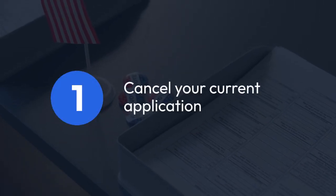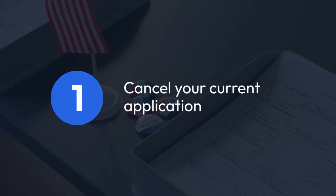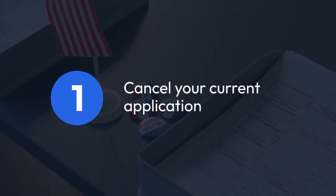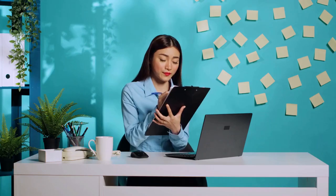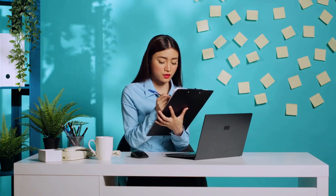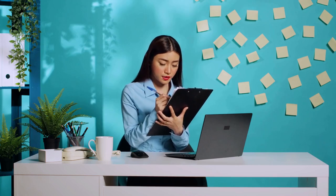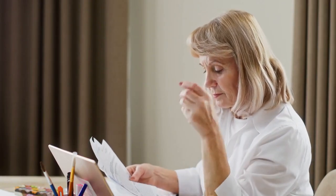Step 1: Cancel your current application. Carefully follow the cancellation procedure outlined on the NBI website. This usually involves logging into your account and looking for an option to cancel or withdraw your application. Make sure to completely understand the implications of canceling before proceeding, as it might affect your application timeline.